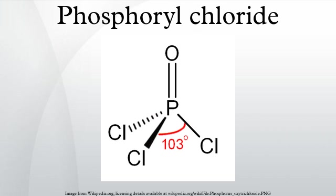Phosphoryl chloride is a colorless liquid with the formula POCl3. With a freezing point of 1 degree Celsius and boiling point of 106 degrees Celsius, the liquid range is, incidentally, rather similar to water. It hydrolyzes in moist air, releasing phosphoric acid and choking fumes of hydrogen chloride.